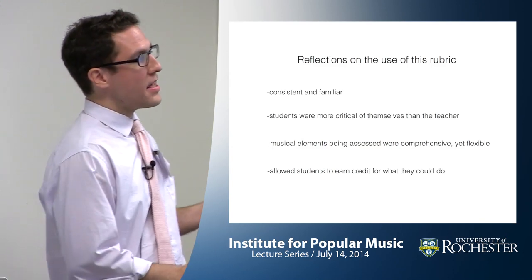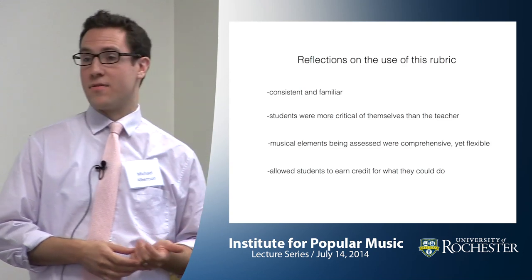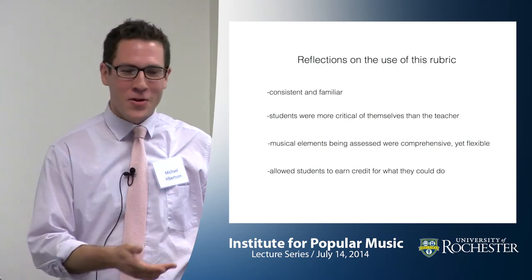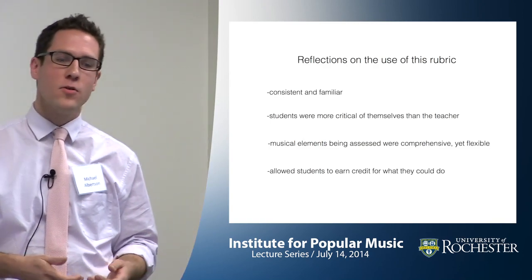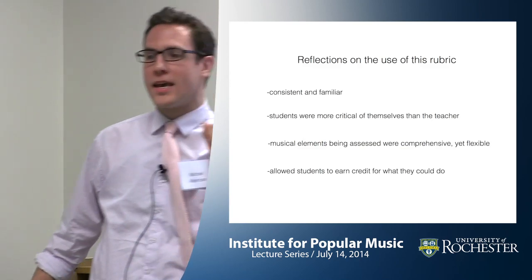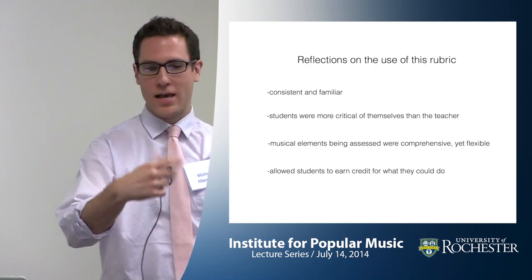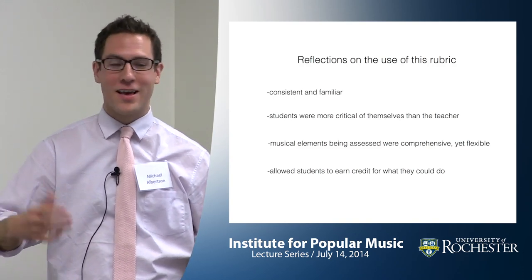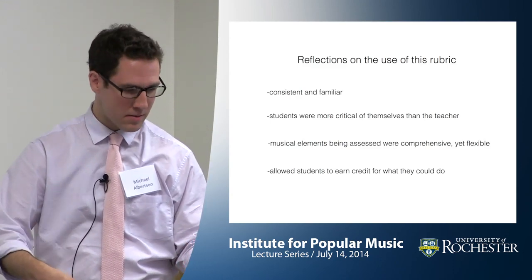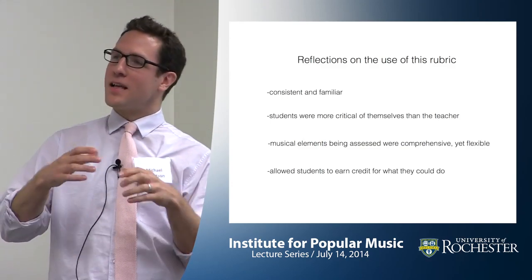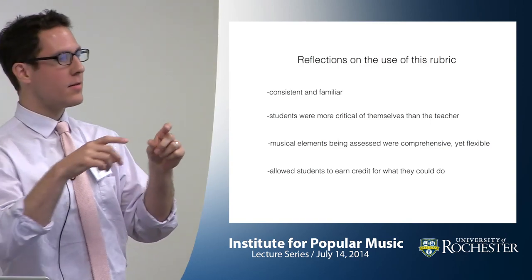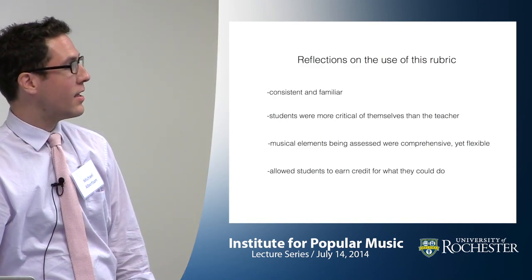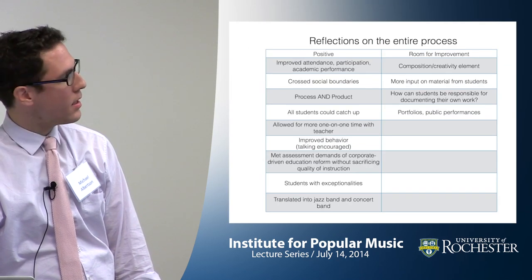Students were way more critical of themselves than I was — they'd look at the rubric and say 'I messed everything up, I'm terrible.' Part of teaching them to evaluate themselves is recognizing what went well. If you can play 'No One' by Alicia Keys with good sound but have trouble switching between chords, to me that's a tempo issue, not a chord issue — the student knows the chords and should earn credit for what they do well. The flexible rubric allowed them to see themselves getting better, and they could use the same rubric throughout the whole year.